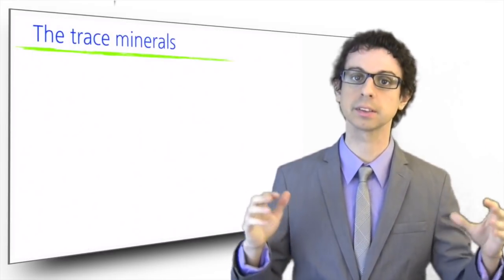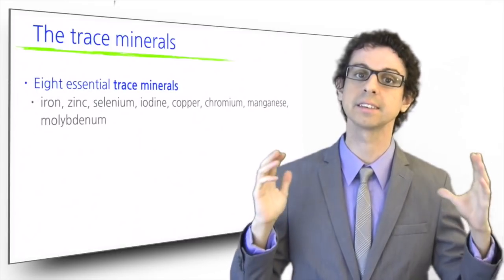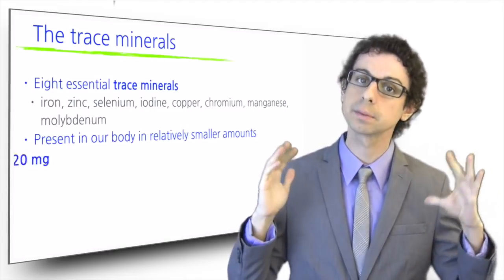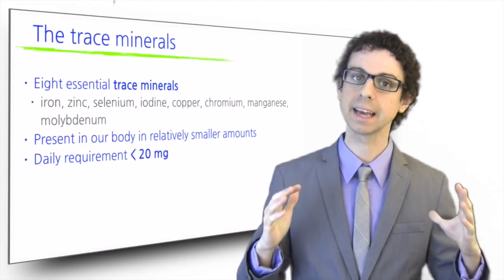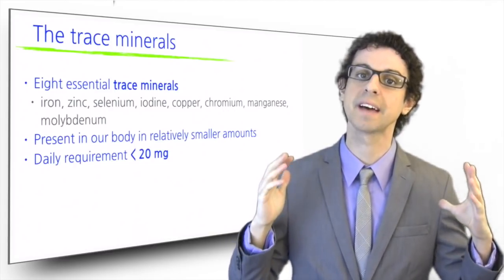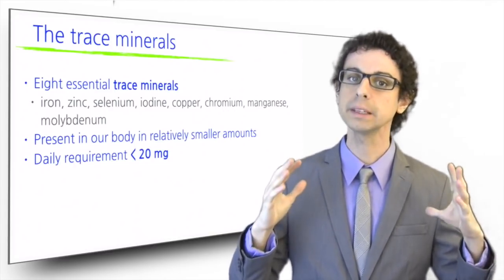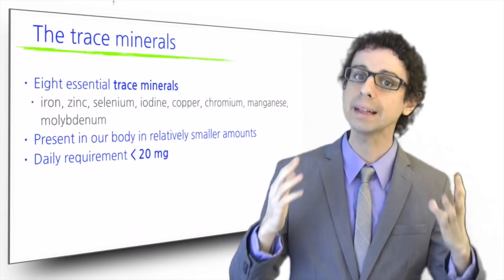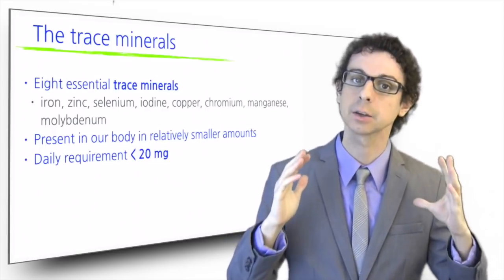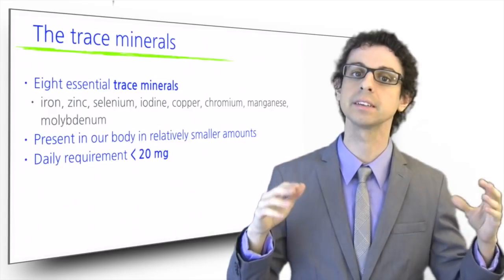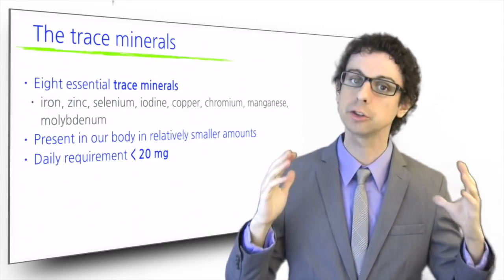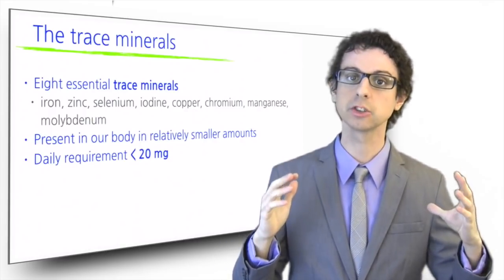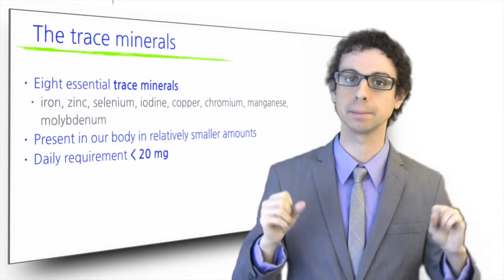On top of the major minerals, there are eight more minerals that are recognized as essential, but are present in much smaller amounts in our body, and thus we need smaller amounts from food. Back in the days when analytical chemistry didn't have very advanced tools, these minerals were present in such small amounts in our body tissues that we could only determine their presence, but not their exact quantity, which was simply reported as present in trace amounts. And while today we do have advanced techniques to quantify these minerals with much greater precision, we still refer to them as the trace minerals.